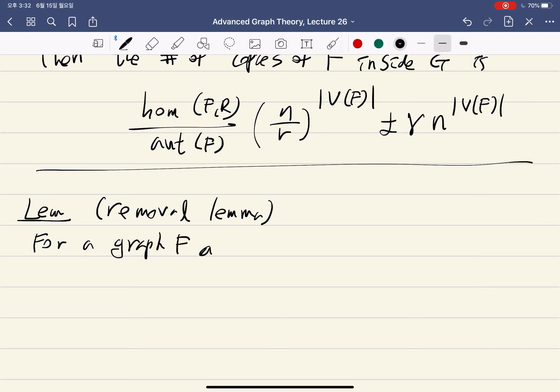F and positive epsilon, there exists delta such that every graph with less than delta times n to the number of vertices in F copies of F